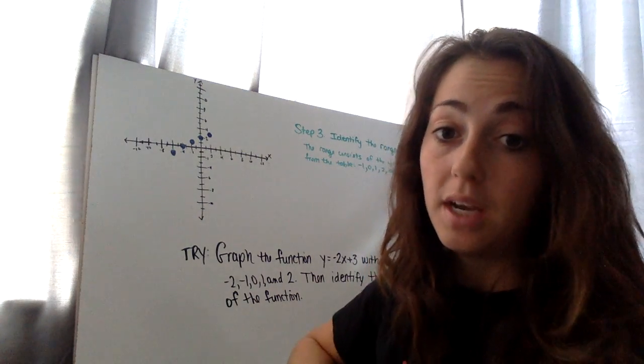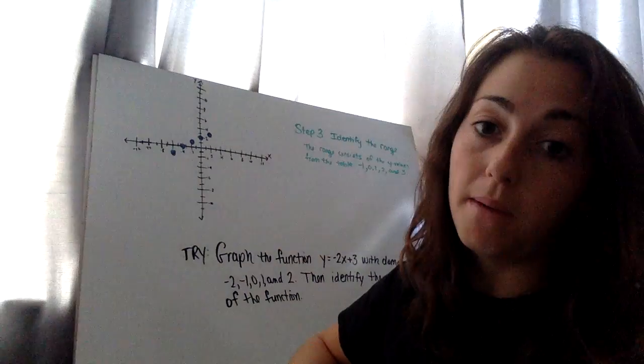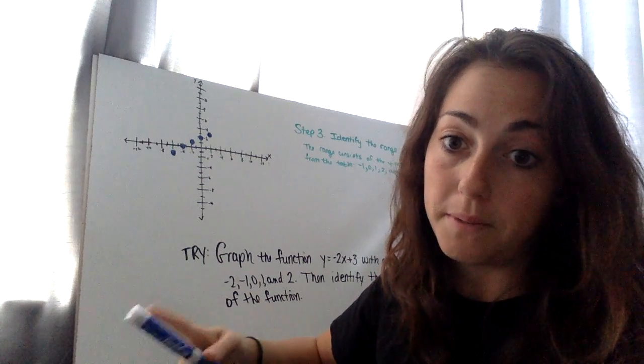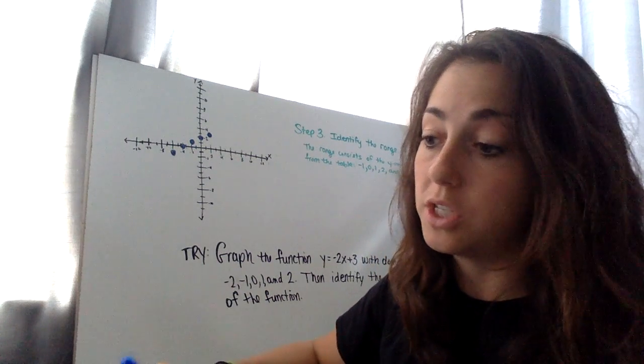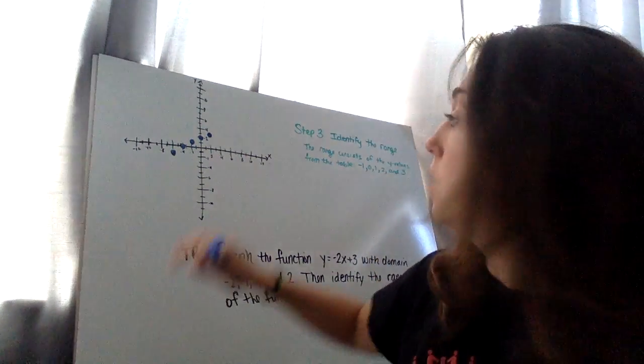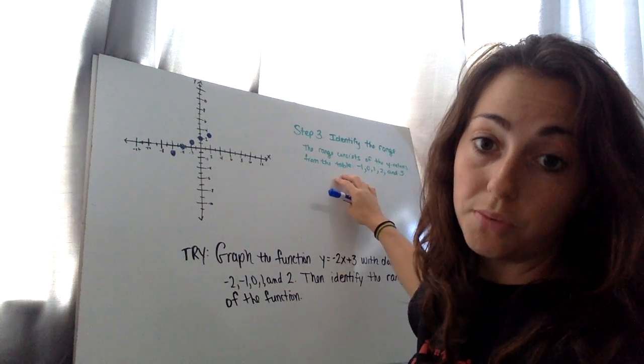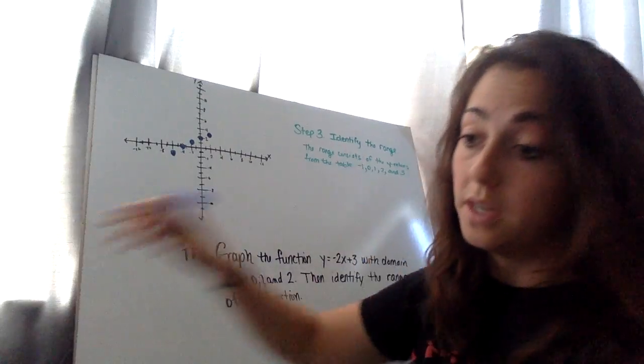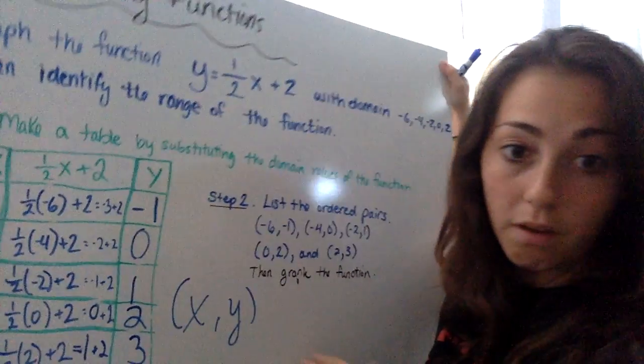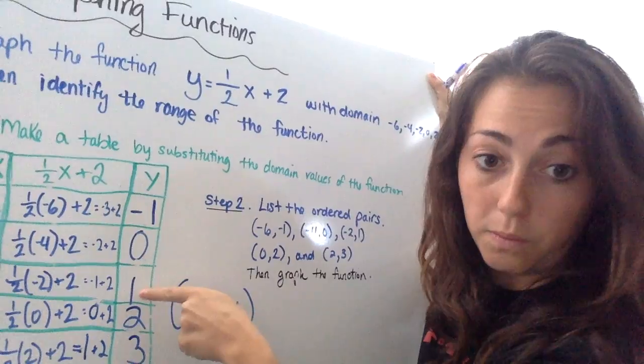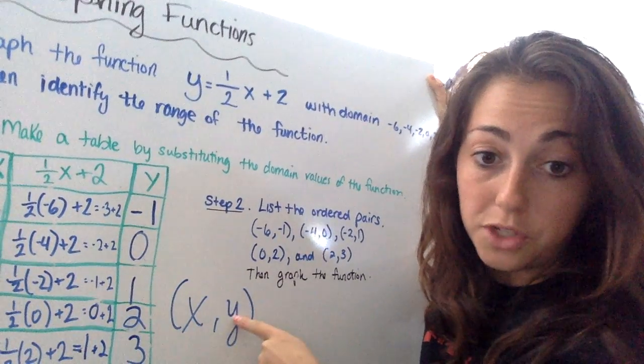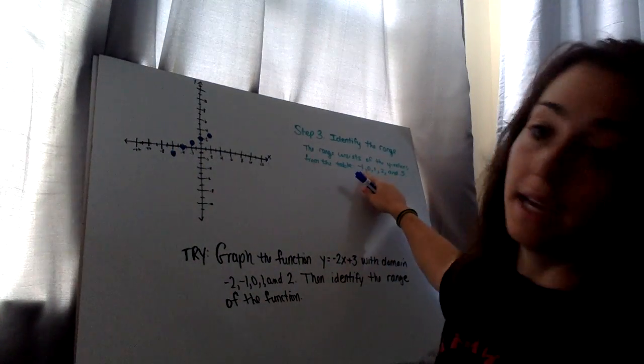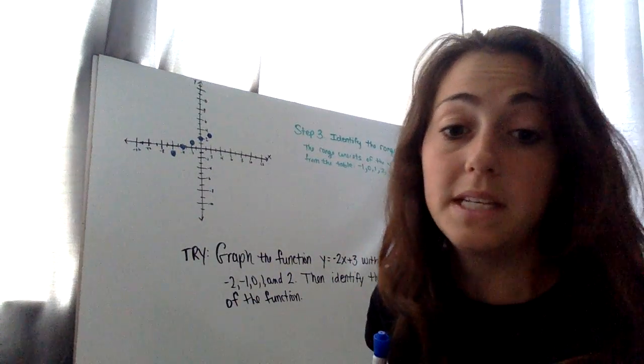Once you're done with that. Step three. The last thing the problem asked us to do was to identify the range of the function. You should be seeing that at the top of your paper. So the range of the function is your y values. So that's why I wrote here, identify the range. The range consists of the y values from the table. So what are my y values from the table? Negative 1, 0, 1, 2, 3. The range of the y values, that's my answer. Identify the range. Done. Negative 1, 0, 1, 2, and 3. And that's my answer.